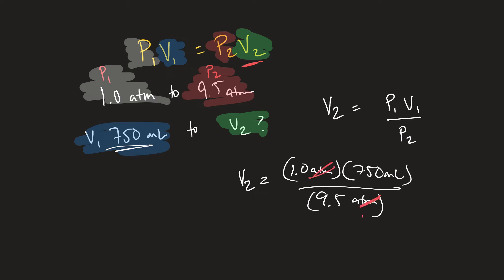If you notice, the ATMs will cross out, which is exactly what we hope for, so that what's left is milliliters. Now in your calculators, you'll just simply take the 1.0 times 750 and divide by 9.5, and this will give you the volume when it's completely compressed.